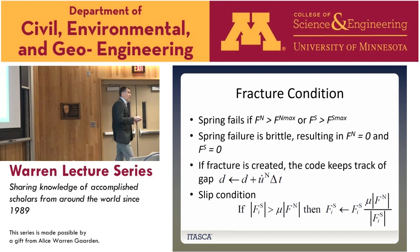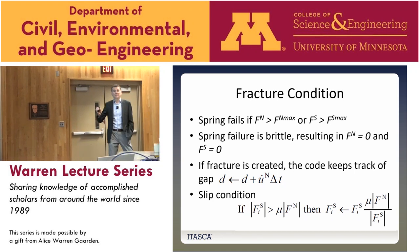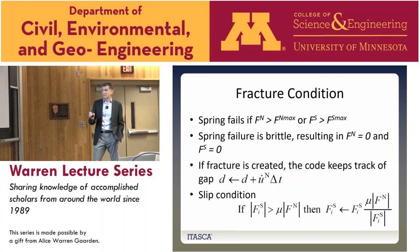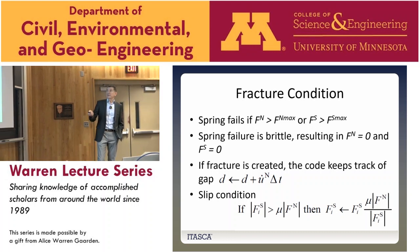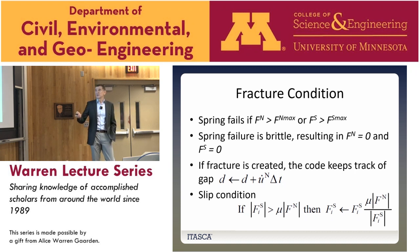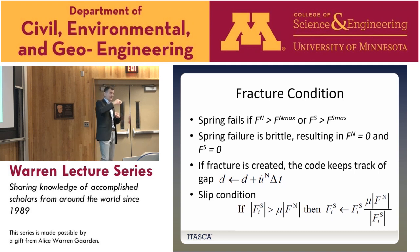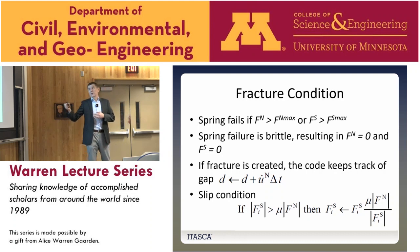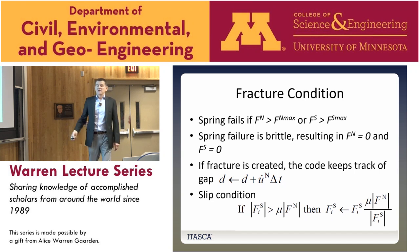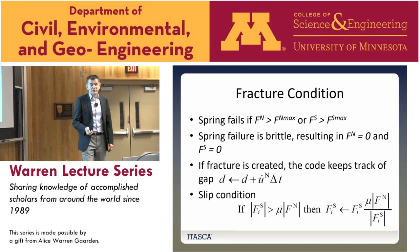In most calculations we assume failure is brittle, meaning if a spring breaks it fails in both tension and shear simultaneously. After a spring breaks, we keep track of the gap — the fracture can open, but depending on evolution of loads and pressure, it can close again. If it closes, then — as applies also for pre-existing joints — the fracture can slip, which is controlled by the Coulomb slip law.